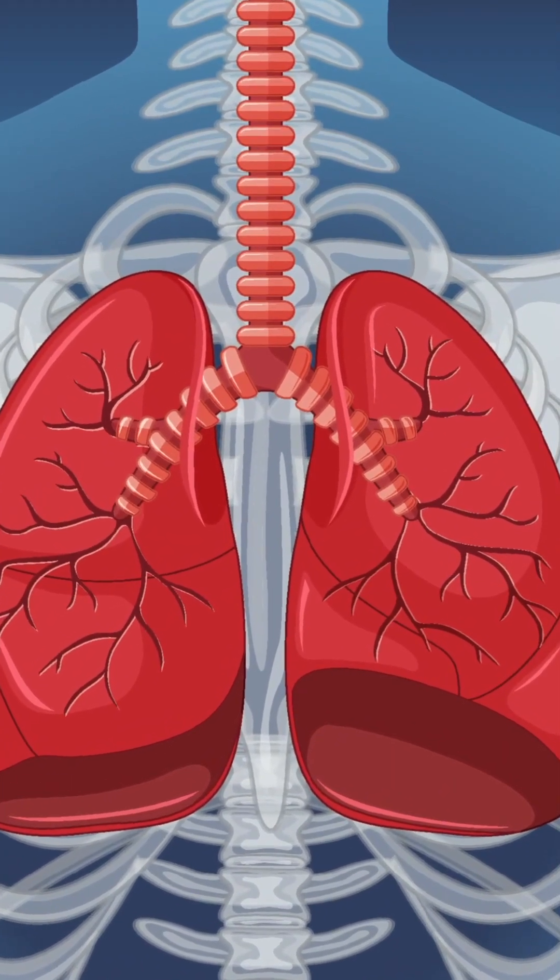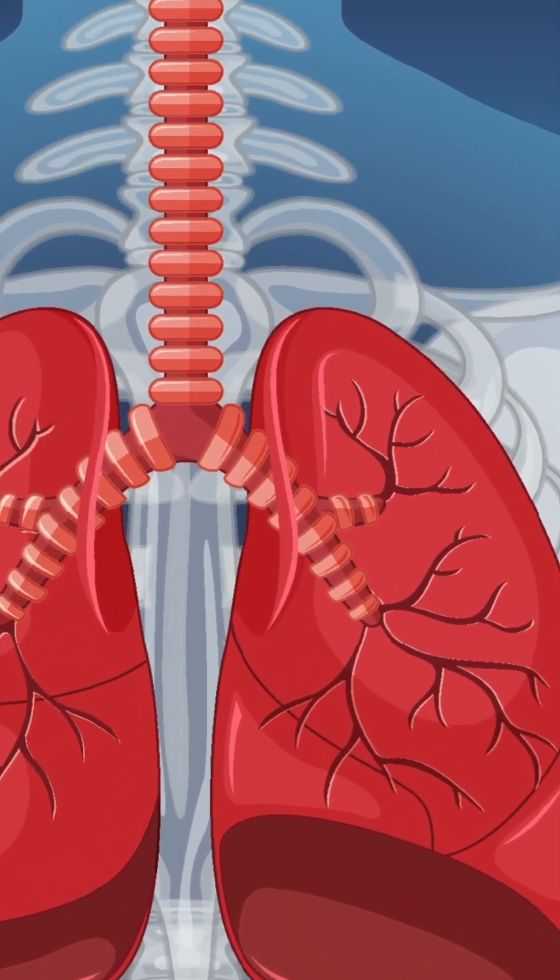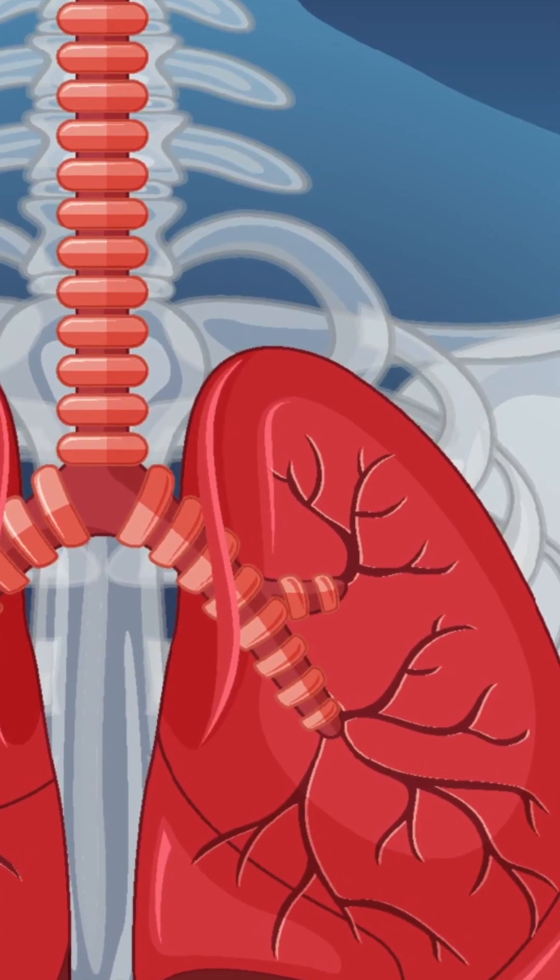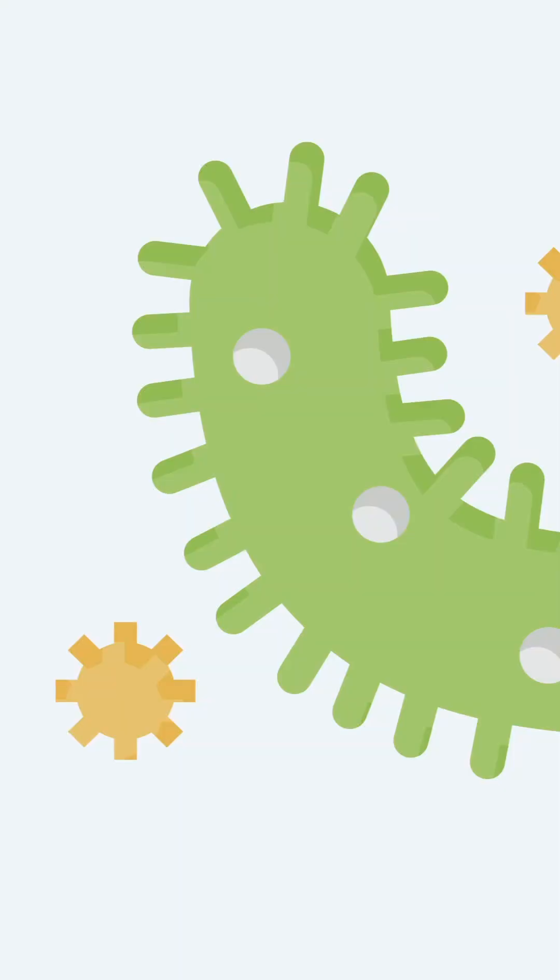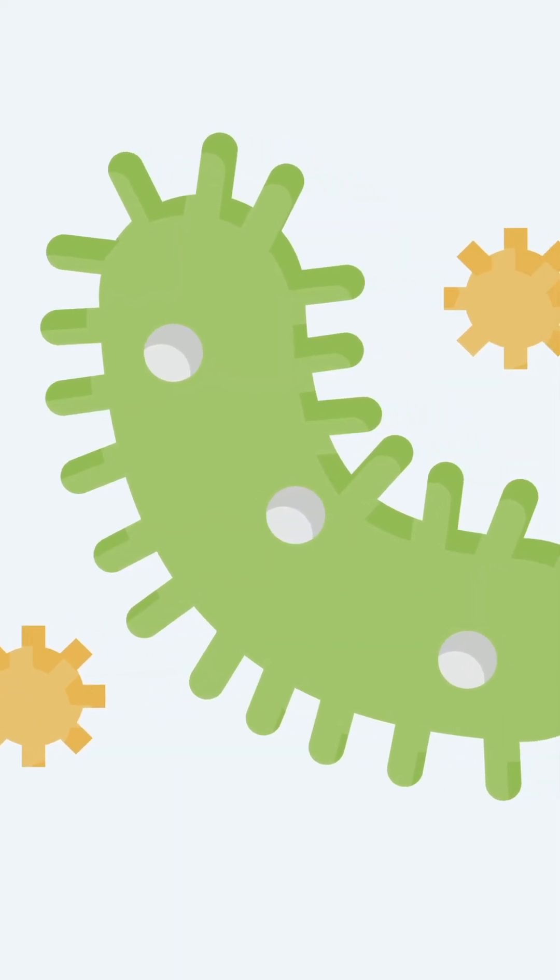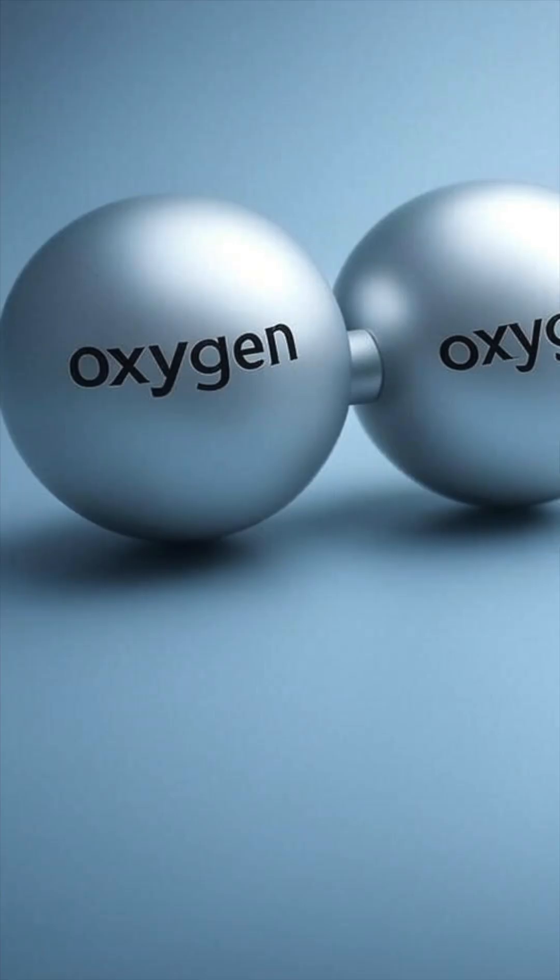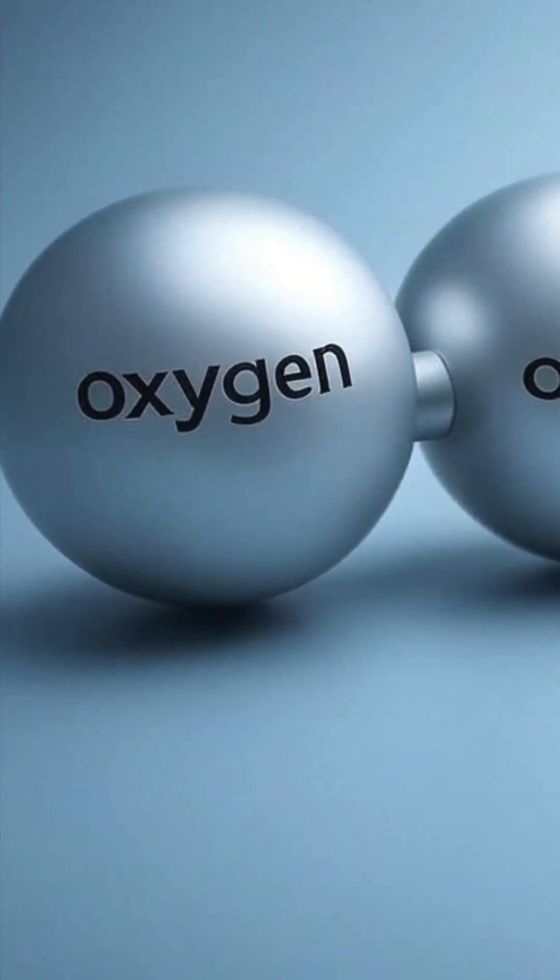Why are lung upper lobes more susceptible to infection by Mycobacterium tuberculosis? Mycobacterium tuberculosis is a strict aerobe, which means it prefers an environment rich in oxygen.